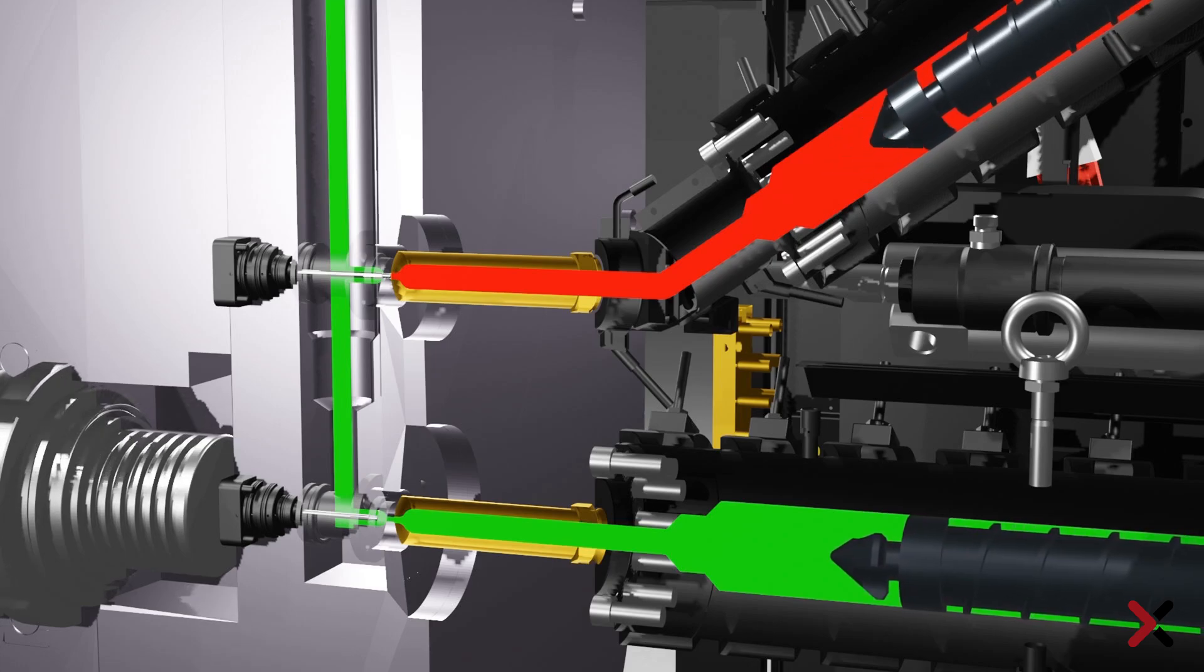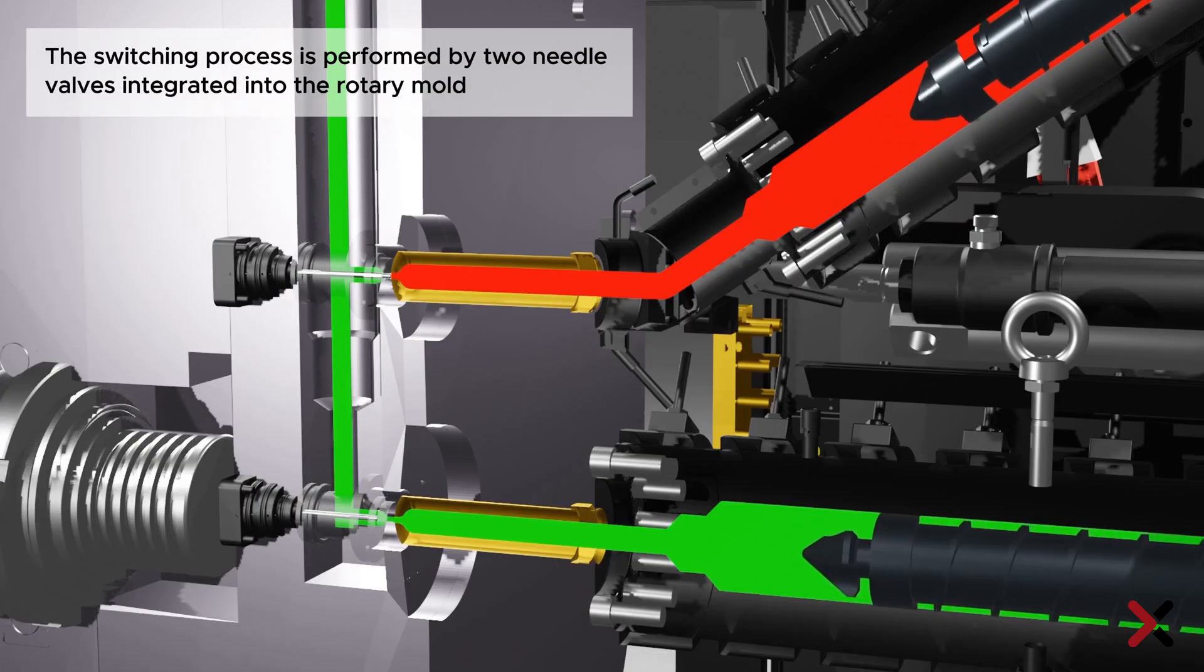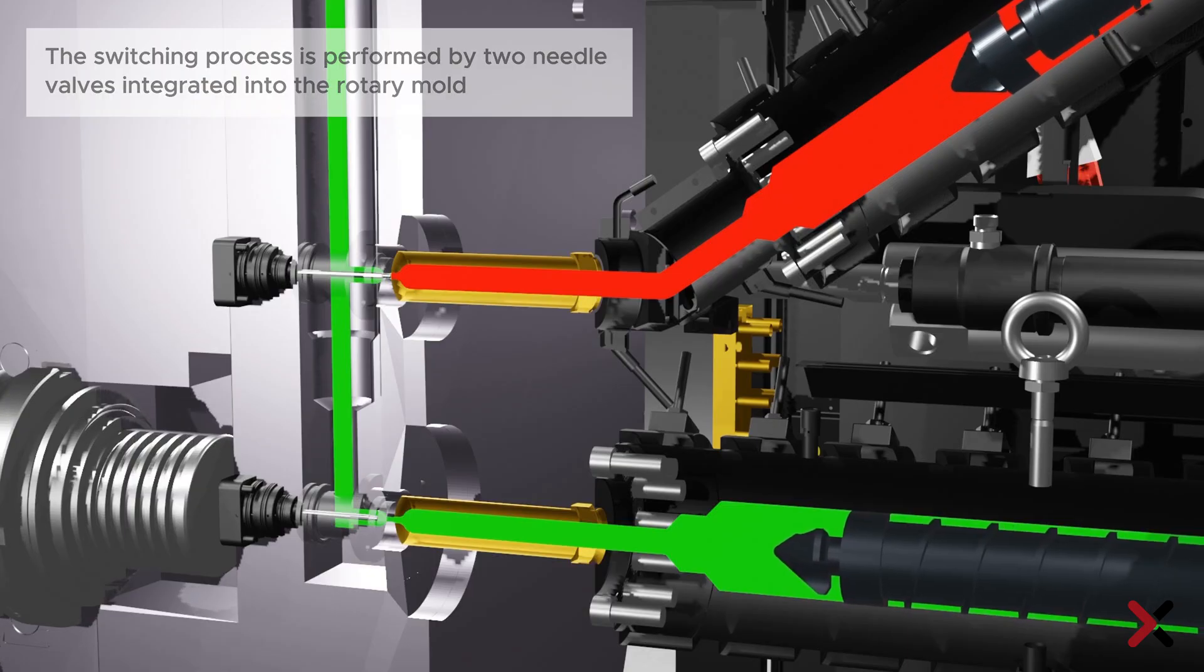Now as depicted, the lower unit injects and the upper unit doses. The switchover process is executed by two needle valves integrated into the rotary mold.